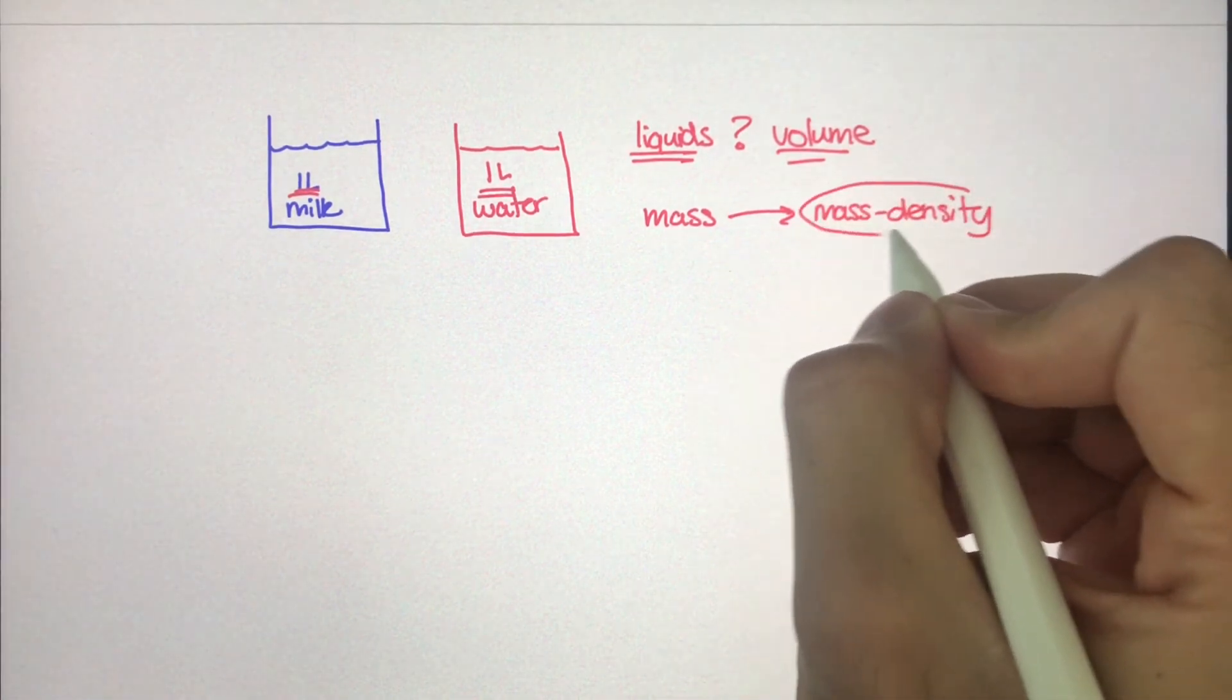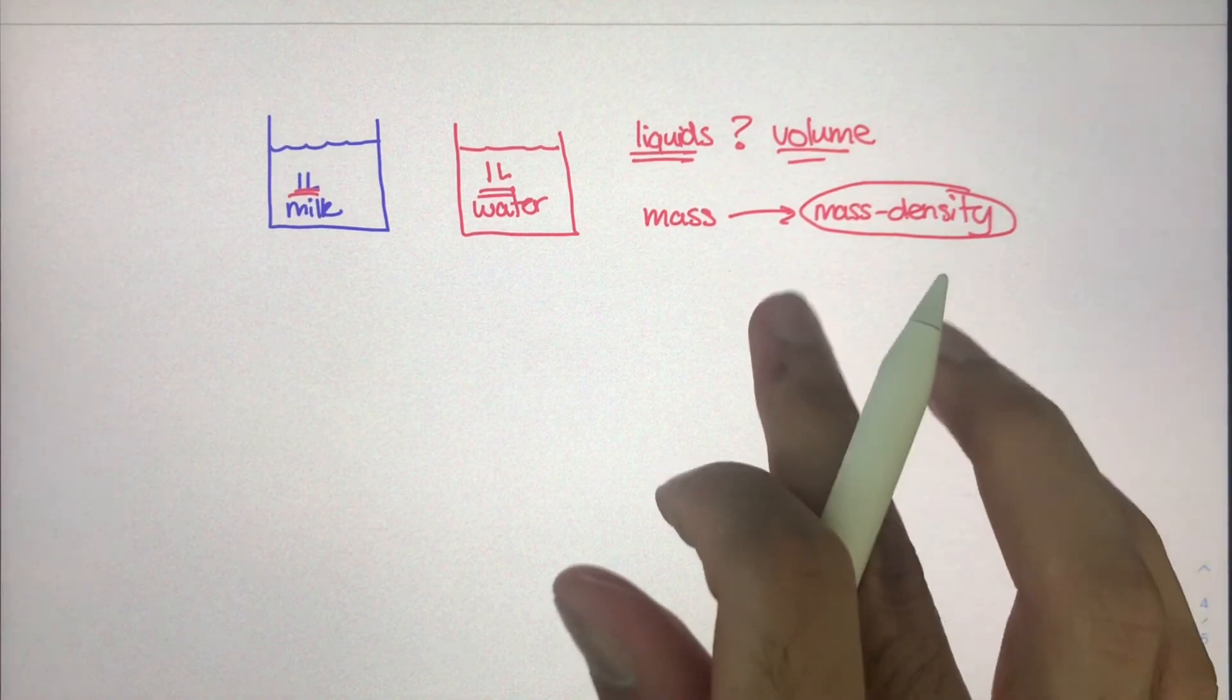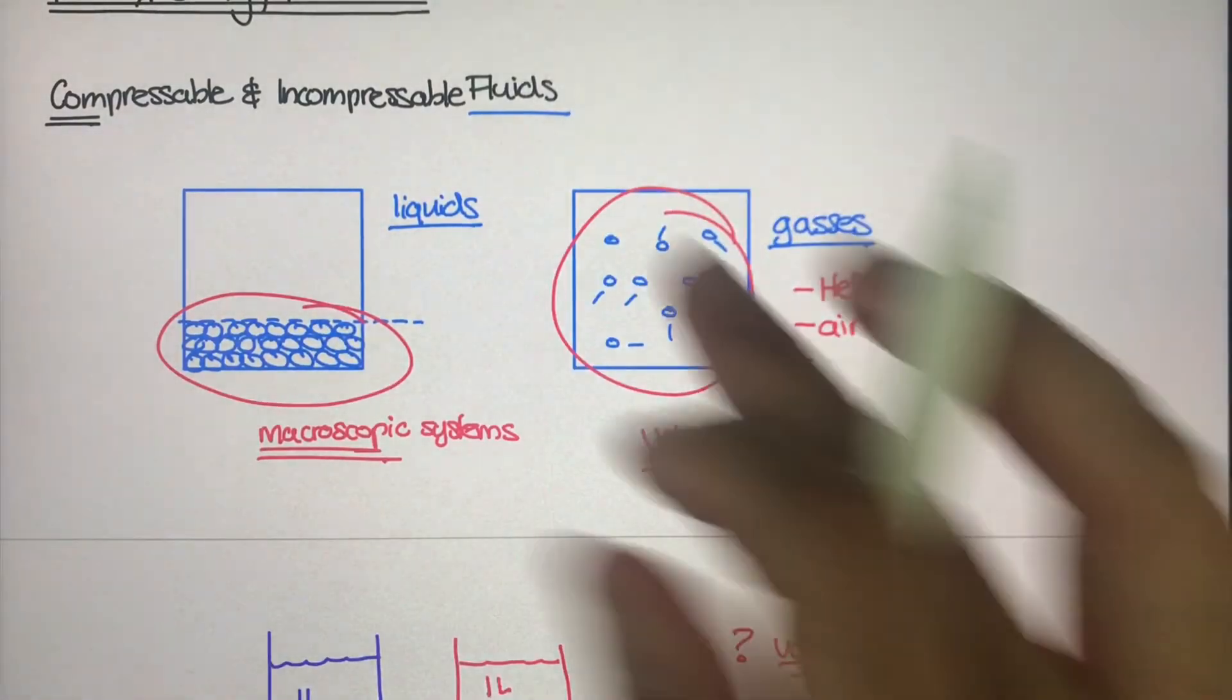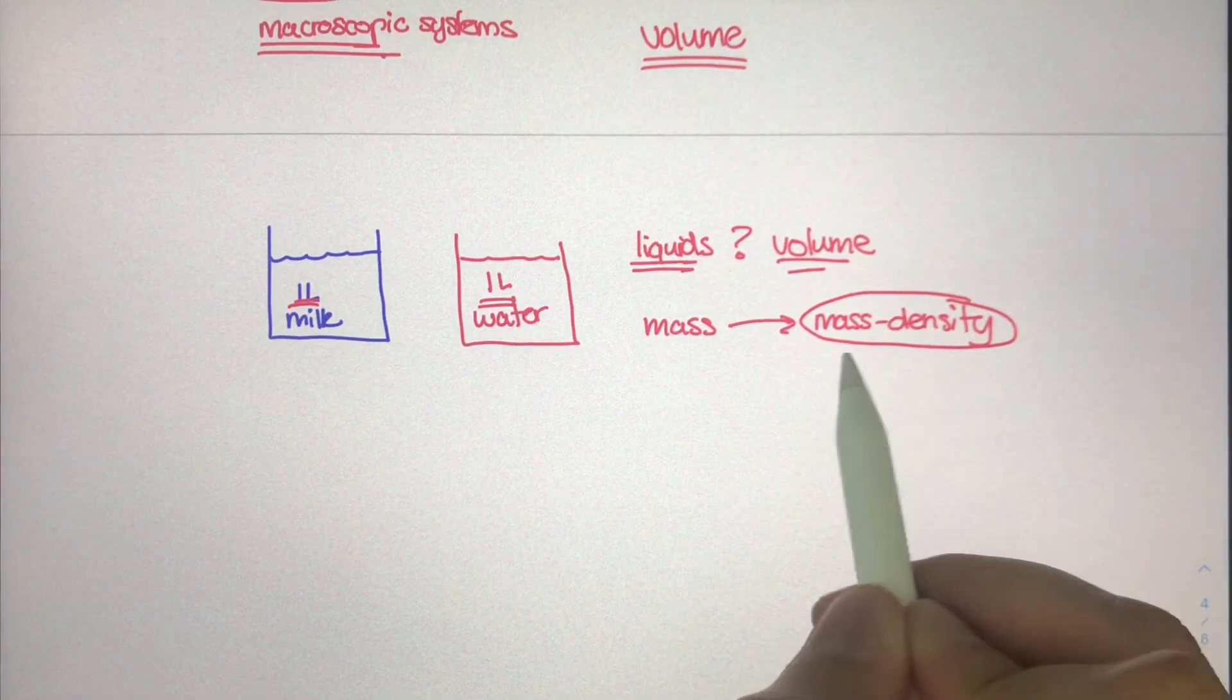And this right here is a really, really important part of fluid mechanics. Because everything that we've been studying so far with different containers and molecules and compressible and incompressible fluids—it's really the mass density that defines the difference between one type of fluid with another type of fluid.